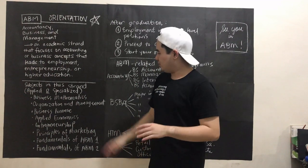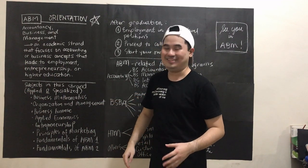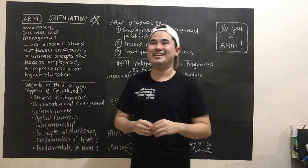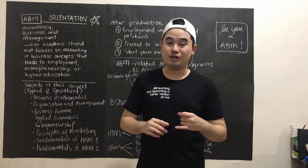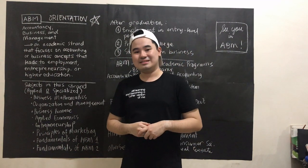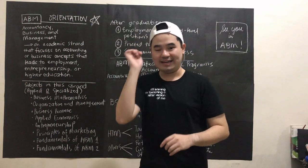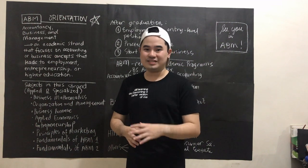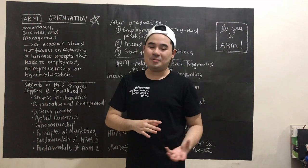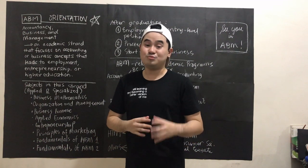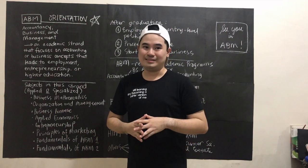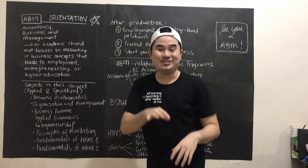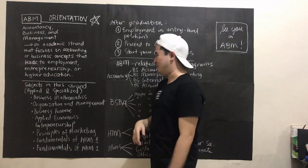So what are the subjects in the ABM strand? Of course you will not get away with your core subjects like English — oral communication, reading and writing skills, English for academic and professional purposes — and then mathematics, science, and physical education. And then some social science subjects like Understanding Culture, Society, and Politics, or UCSP.